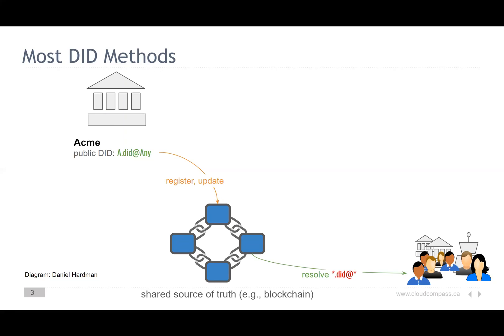In traditional DID methods, a public entity like Acme would put their DID on a blockchain, on a ledger, and it's visible to everyone. In this picture, we see that Acme has registered a DID, put it on the blockchain, and anyone in the world can resolve it and see what's in the DID doc. Bob wants to establish a relationship, a connection between himself and Acme, and he can resolve Acme's DID to start the connection.